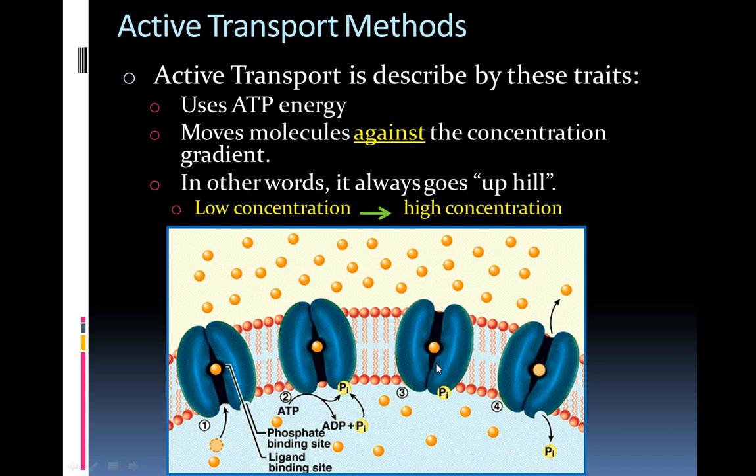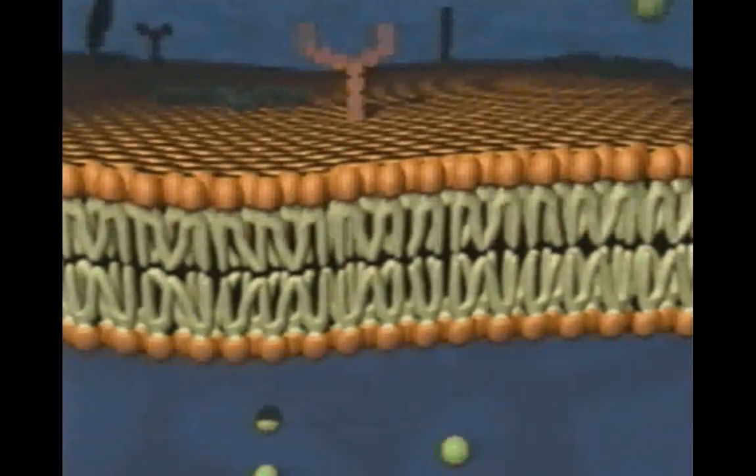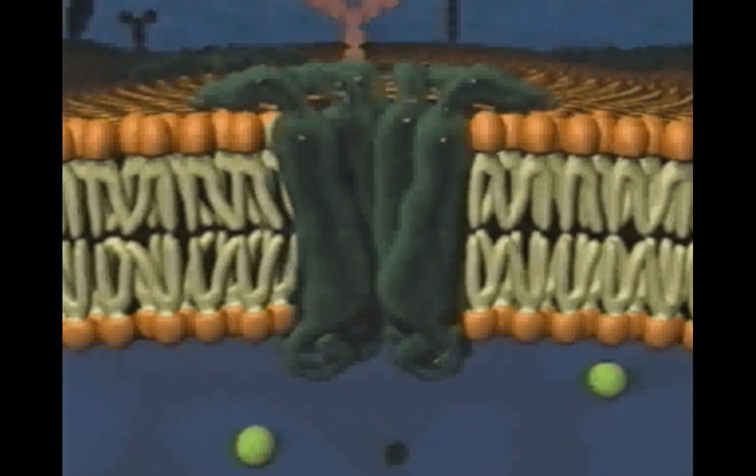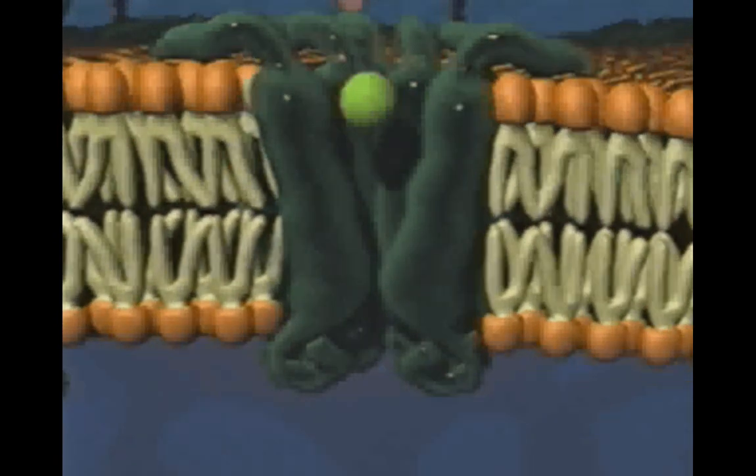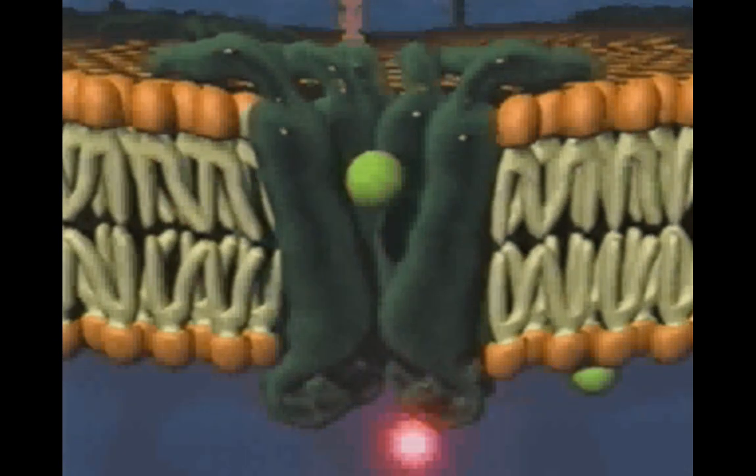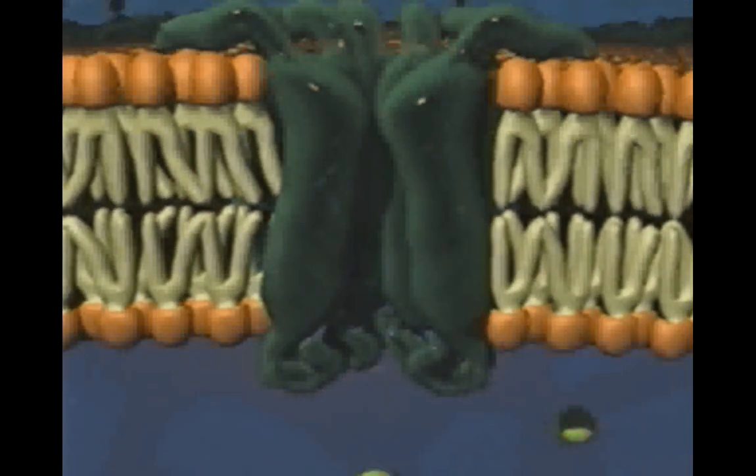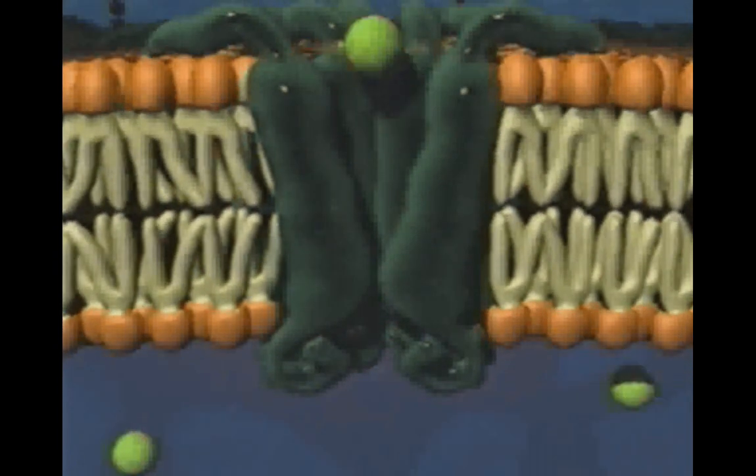And then ATP is used to change the shape of this kind of clamshell structure. And you'll see that in this third frame, the bottom is closed and the top is open, and now that molecule is pumped out. So it's using energy to pump molecules from areas of low concentration to areas of high concentration. So it's exactly the opposite of passive transport. In this case, the cell uses transport proteins which need a boost from an energy molecule. This actually changes the shape of the proteins, causing them to pump different molecules and ions across the membrane, now from the side with fewer solutes to the side with more.